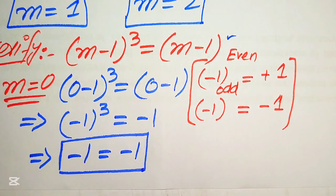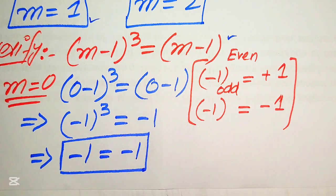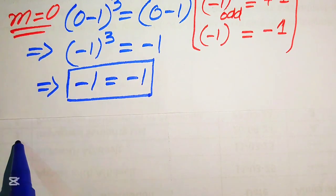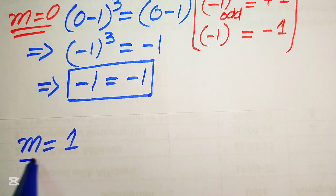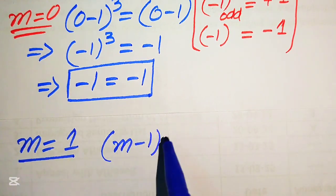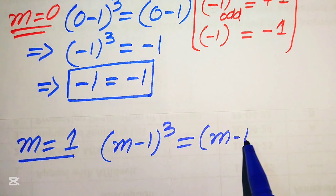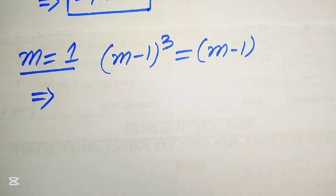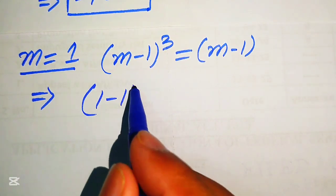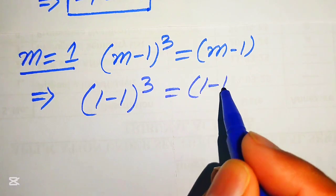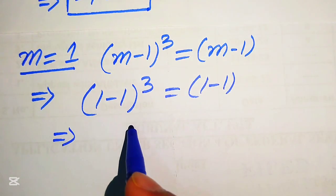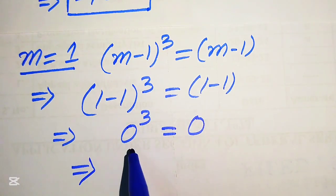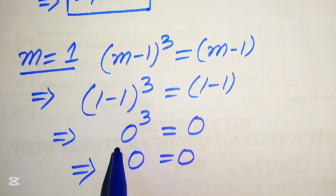For m = 1: substituting into (m - 1)³ = m - 1 gives (1 - 1)³ = 1 - 1, so 0³ = 0, and 0 = 0. This confirms that m = 1 also satisfies the given equation.